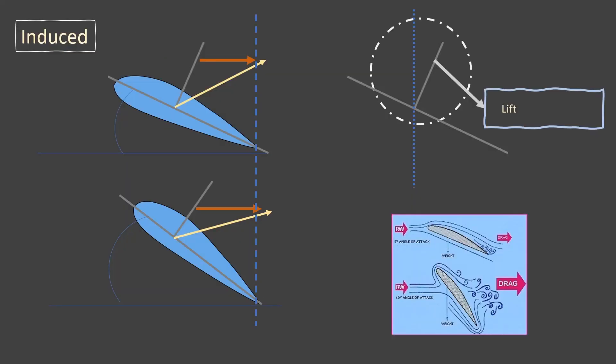Induced drag is the drag generated due to the lift. As you can see the lift force is not vertical, it is inclined at some angle. Therefore, drag force increases with increase in the angle of attack. As the angle of attack increases, the flow separation also increases.